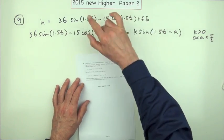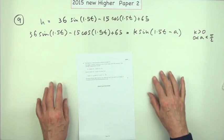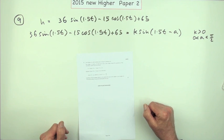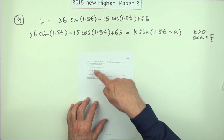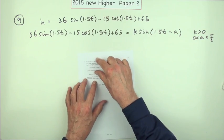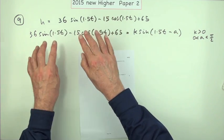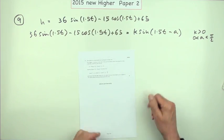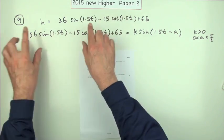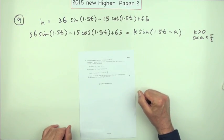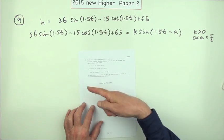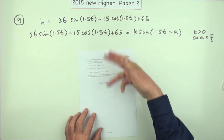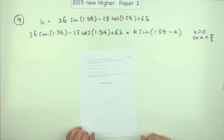So number nine from paper two of the 2015 New Higher, the last question — the wave function. Normally you'd expect that to be in two parts: the first part would say express this as a single term, and then the second part would say do some operation on that. But here it's just one big block all the way through.